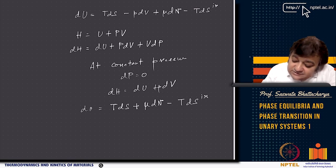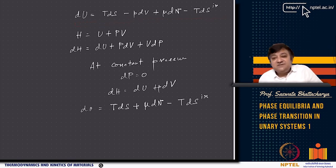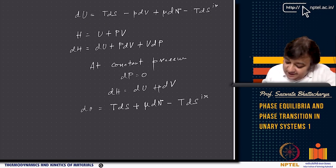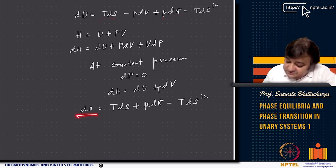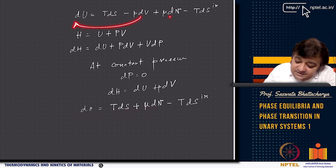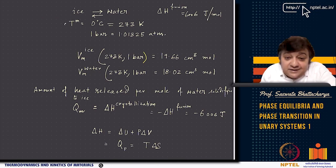Using the combined first and second law: at constant pressure (dP = 0), dH = dU + P·dV, so dH = T·dS + μ·dN. The melting point or freezing point is 0°C — that is the critical temperature, the phase transition temperature. The phase transition is 0°C at 1 bar pressure.